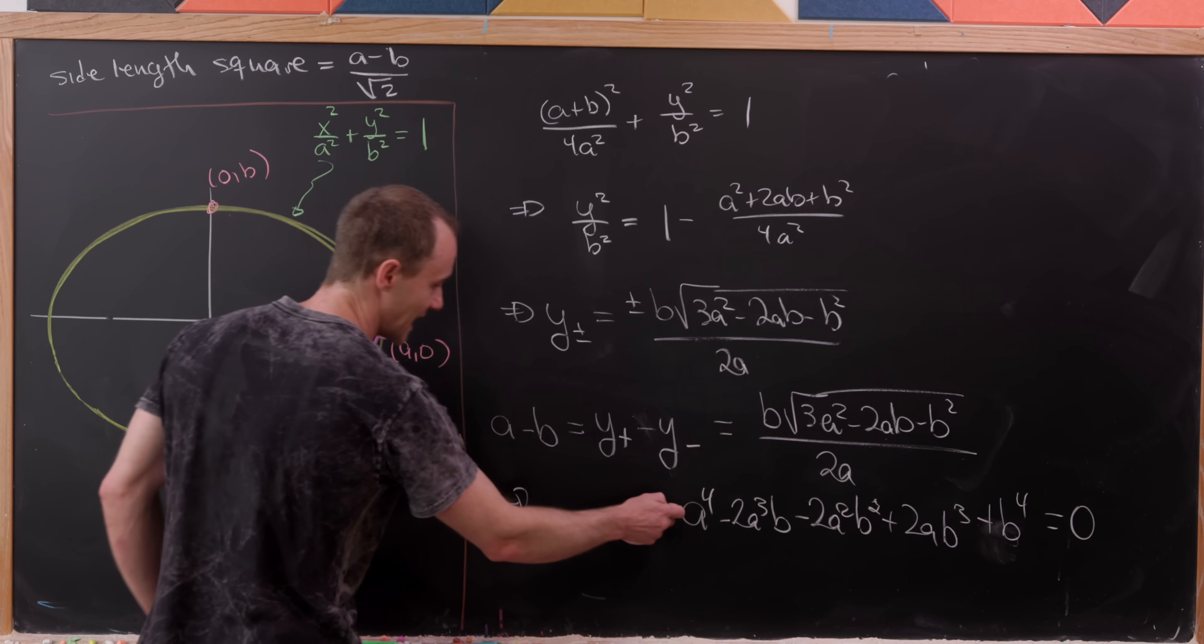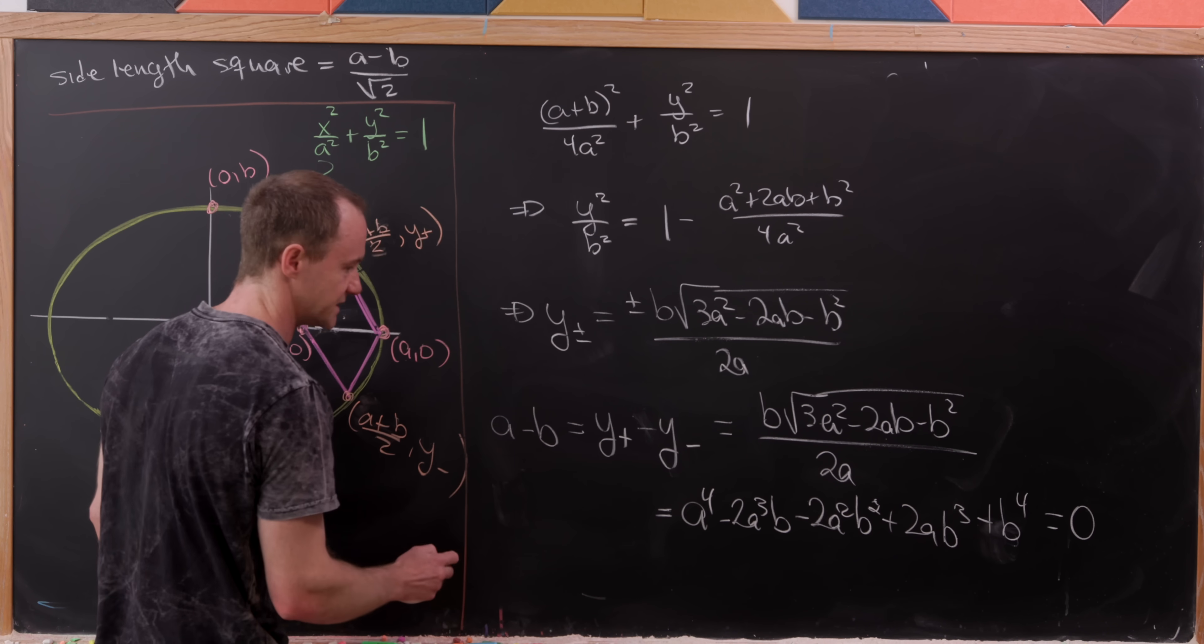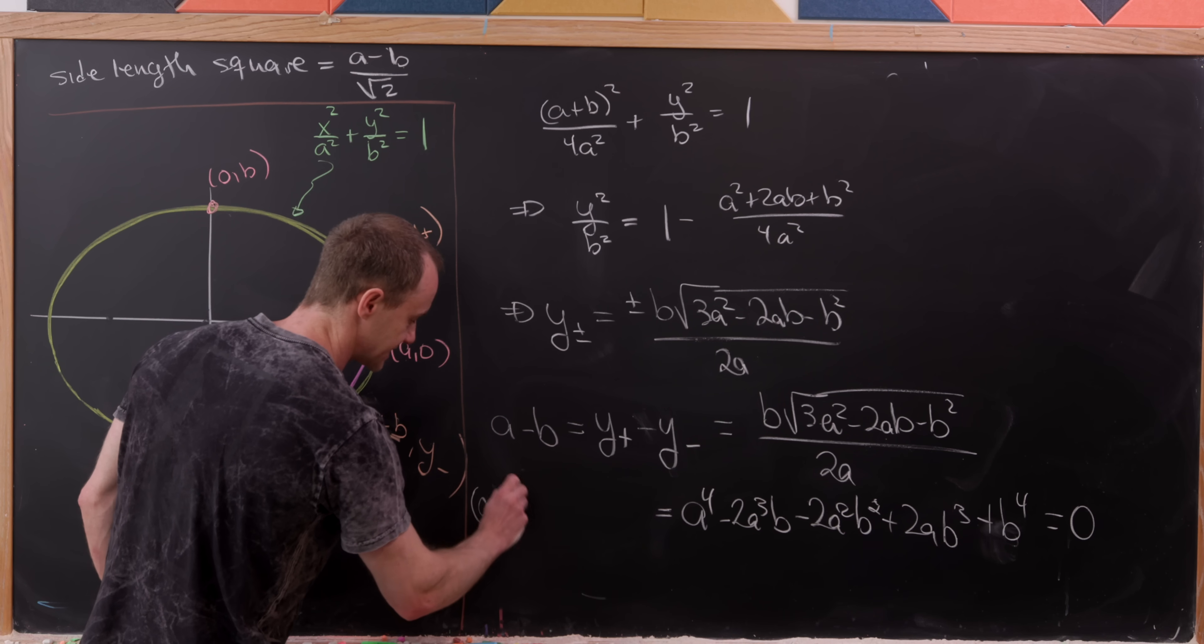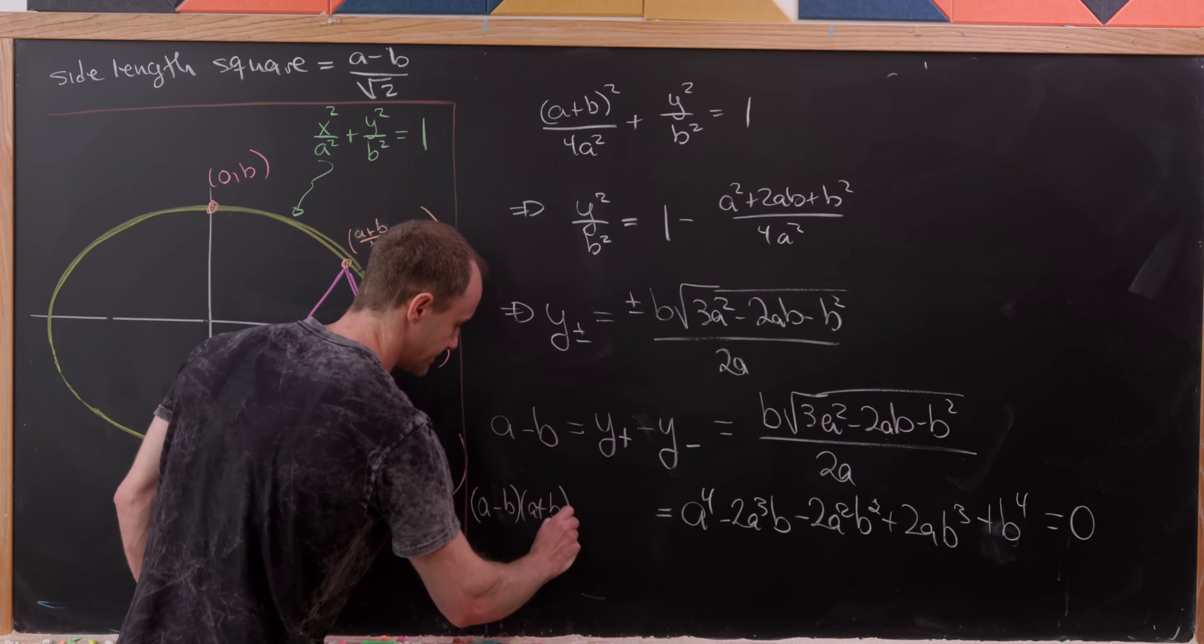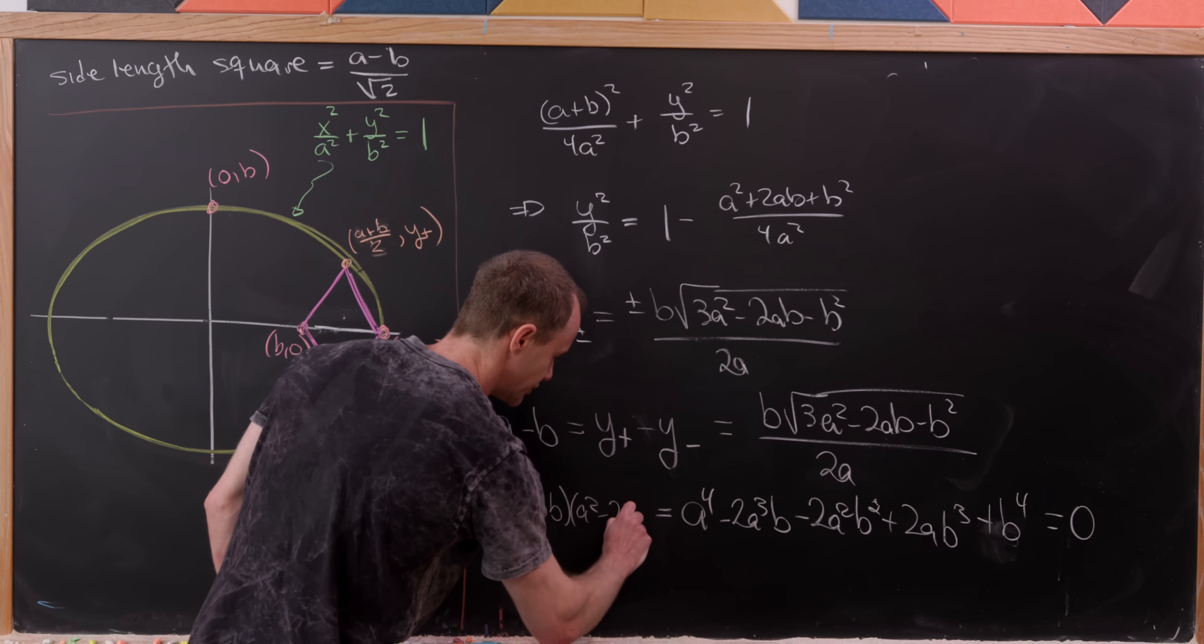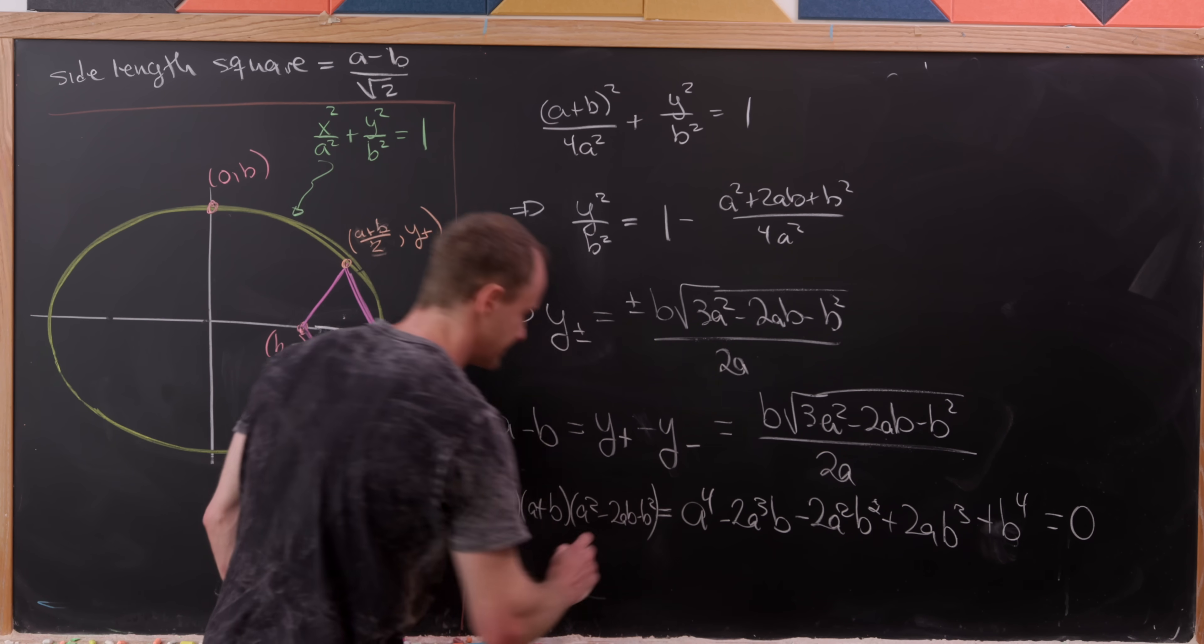But perhaps surprisingly, this has a nice factorization. In fact, it factors like (a - b)(a + b)(a² - 2ab - b²).